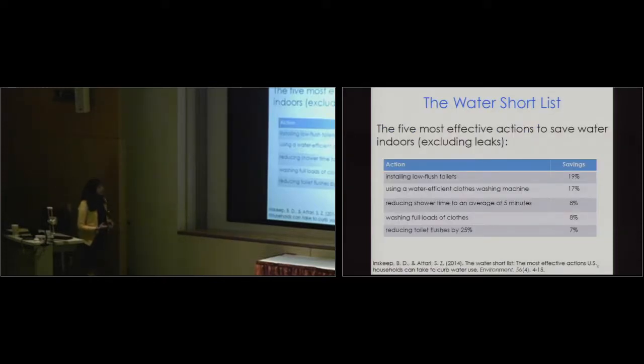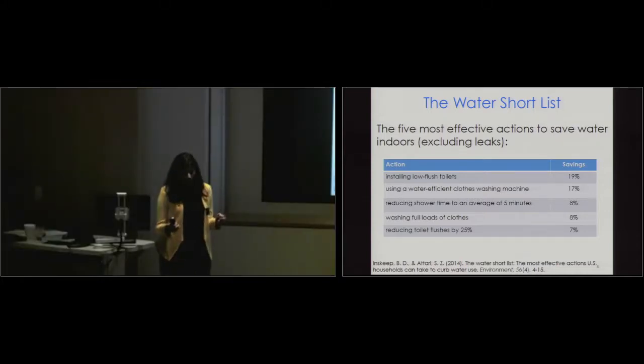So what we did was Ben Inskeep and I, what we looked at is, all right, we looked at the home and we tried to figure out if you were to incorporate energy, water efficiency as well as curtailment, which is basically doing the same behavior but less of it, what are the most effective behaviors in the home? So the number one behavior we found was installing a low flush toilet, followed by using a water efficient clothes washer, so on and so forth. So this basically identifies, using engineering estimates, what are the most effective behaviors you can do if you wanted to decrease your water use. Does that make sense?